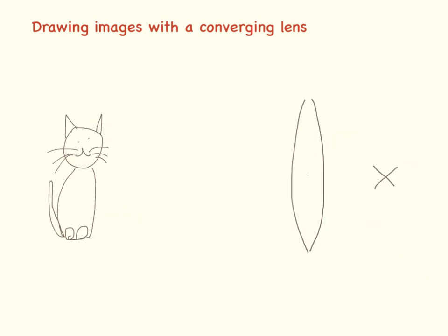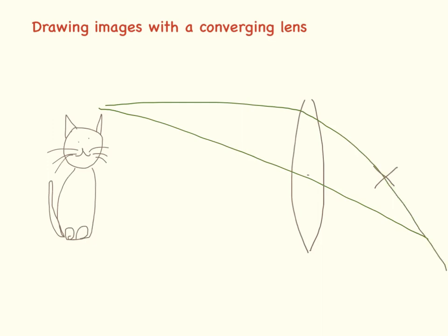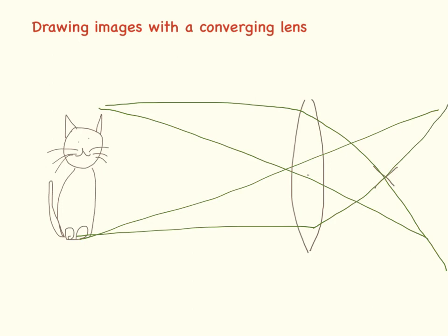Let me show you that again. We need to go from the top of the image through the middle of the lens, then from the top of the image straight across and then through the focal point. From the bottom of the image through the middle of the lens, then from the bottom straight across and up through the focal point. This down here is going to be the top of the image and this is the bottom of the image — it is an inverted image.